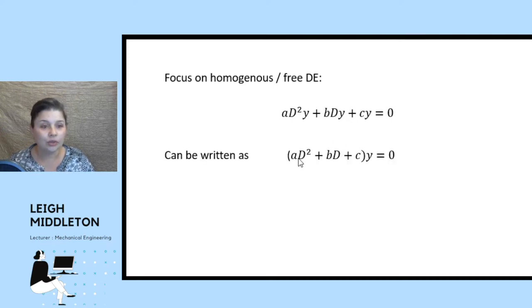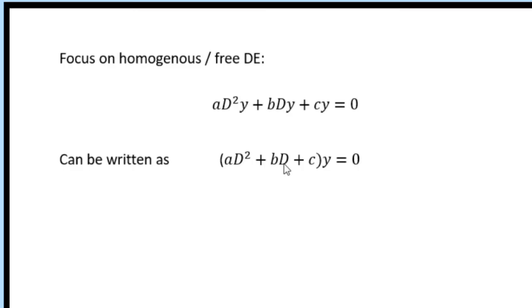This can also be written, because we have d operators now, we can write it in this form, where you bracket off the first three terms and you set the y on the outside. So really you're using the d operator notation because of its convenience. You change the form of the equation that you're working with.